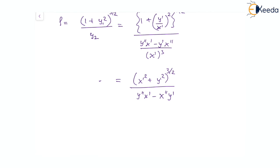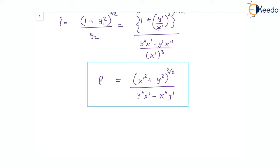This is the expression for rho, the radius of curvature in the parametric Cartesian form, given by (x'² + y'²)^(3/2) divided by (y''x' - x''y'). That will be all about this topic. Thank you.